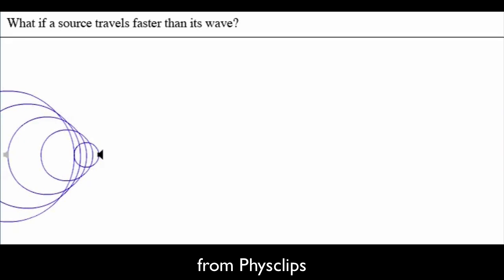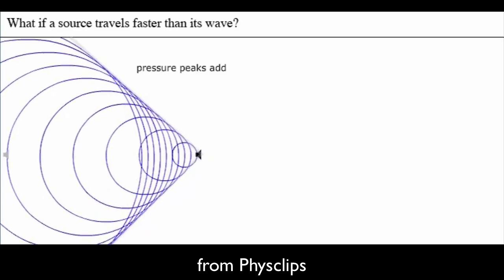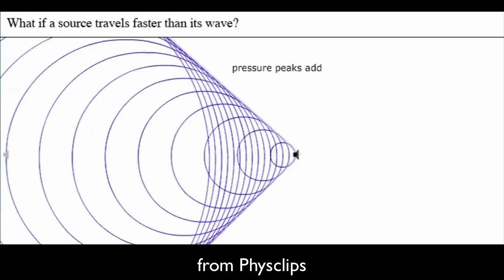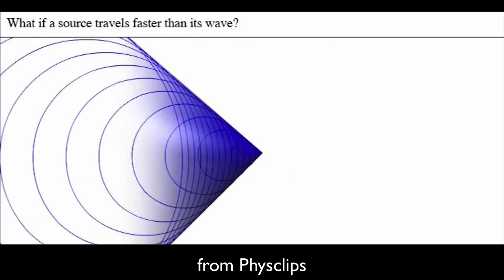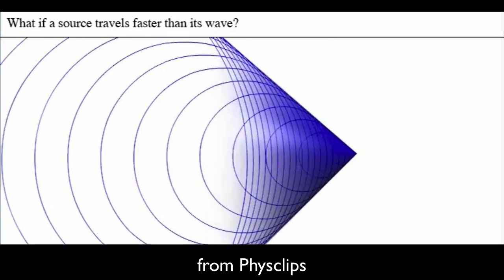So this animation shows what happens when an object moves faster than the wave speed in that medium. You can see you get pressure peaks forming. This shows the same thing in three dimensions.